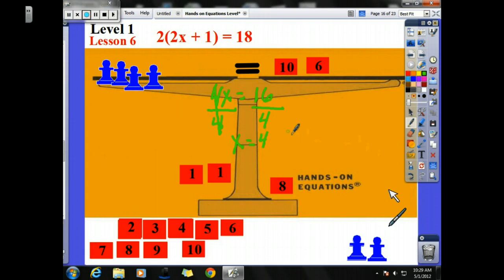Correct answer is x equals 4. Let's look at our check then. 2 times 4 is 8. 8 plus 1 is 9, and 9, that's my answer in my parentheses, times 2 is 18.